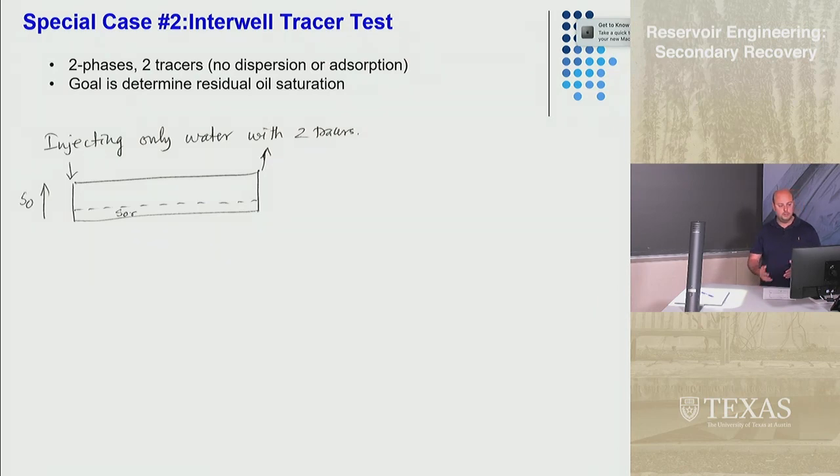Again you inject water with two tracers at the injector well and then you have a producer well where you're producing water and two tracers. You're not going to produce any oil or at least not any significant amount of oil because you're at residual oil saturation. The oil saturation is equal to SOR, the water saturation is one minus SOR.